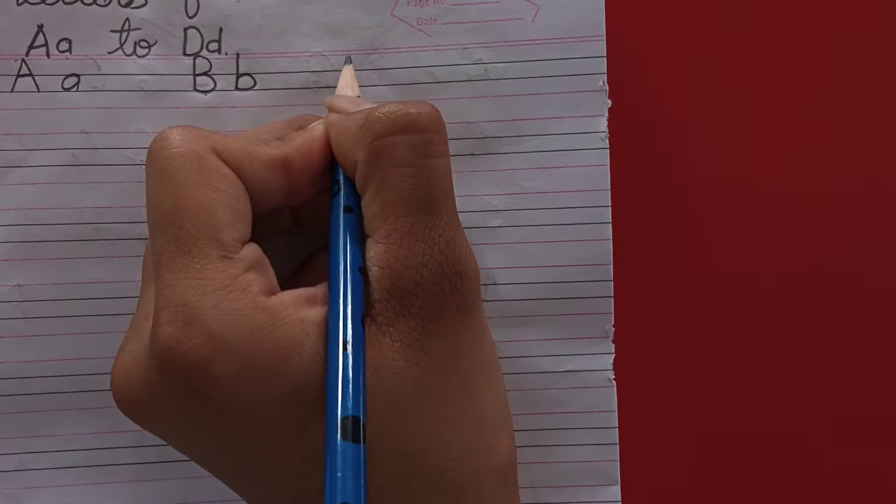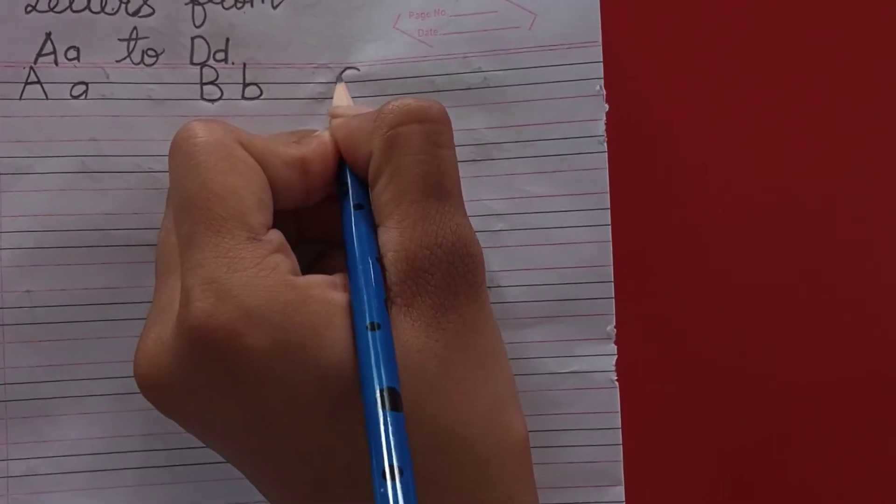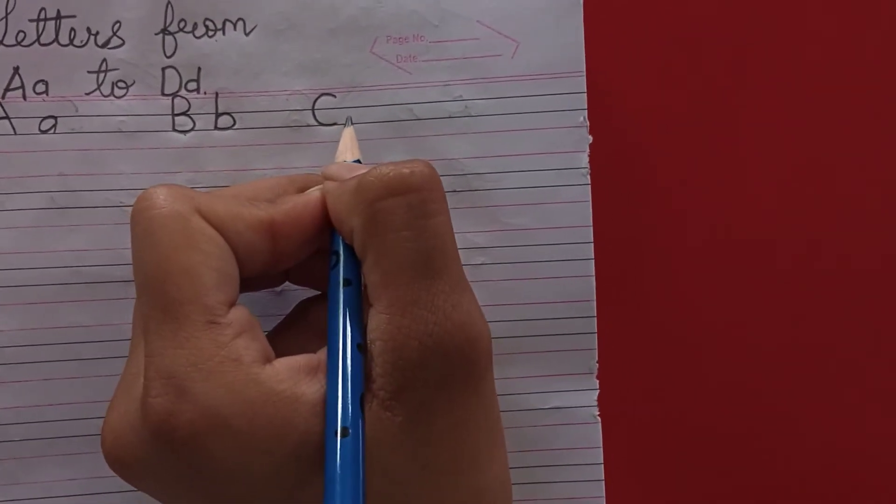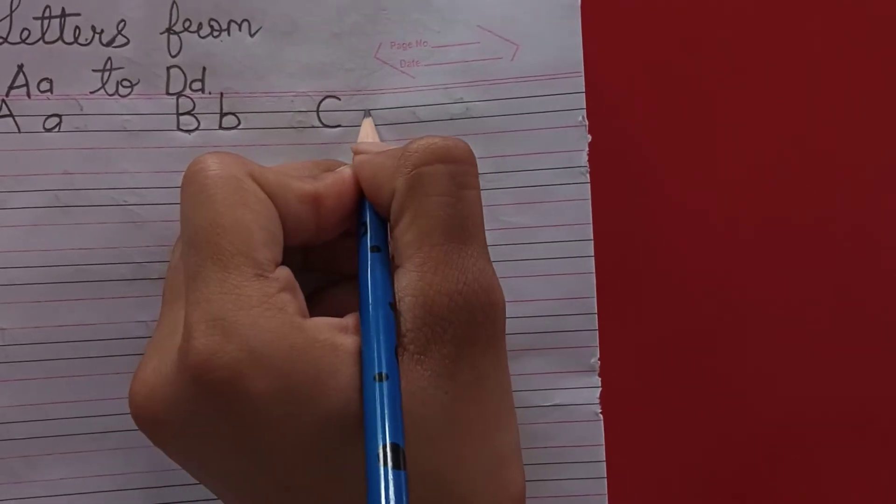We will move to capital letter C. C for cat. Now, we will write small letter C.